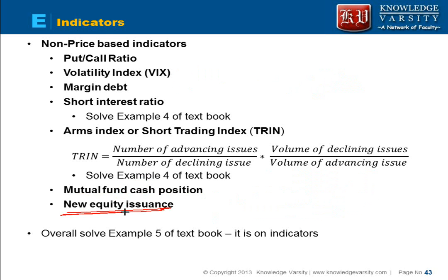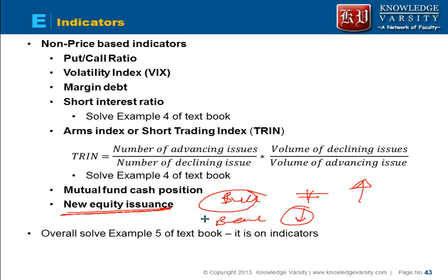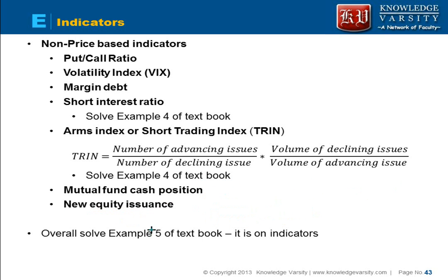The next indicator is new equity issuance. In a bull market, the number of new issues coming to market increases, whereas in a bear market the number of new issues decreases. So when the number of stock issuances increases, it means people are expecting prices to rise. Please solve Example 5 of the CFA book, which covers all these indicators and gives an idea of what they signal about whether the market will be increasing or decreasing.